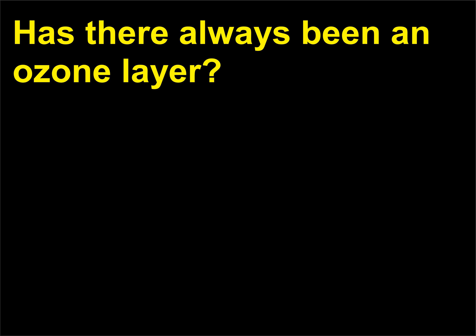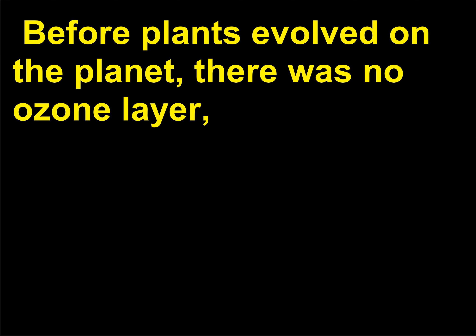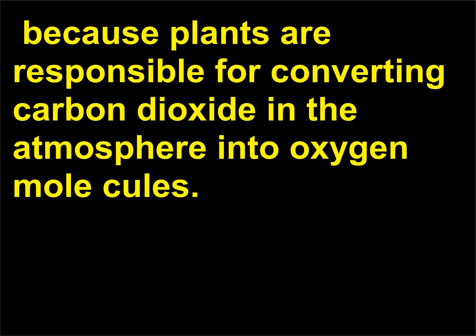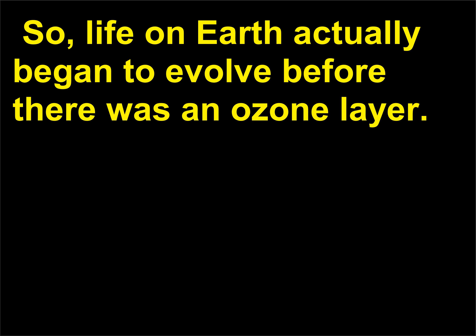Has there always been an ozone layer? No. Before plants evolved on the planet, there was no ozone layer, because plants are responsible for converting carbon dioxide in the atmosphere into oxygen molecules. So life on Earth actually began to evolve before there was an ozone layer.